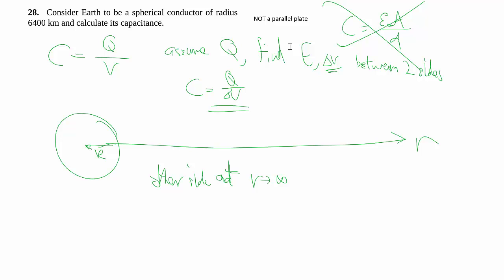So to do so, we assume that there's Q sitting on my sphere which is the earth. And somehow way out in infinity we have negative Q, but we don't really care about that because it's way out in infinity. We find the E by Gauss's law, which of course by spherical geometry we've done this many many times.